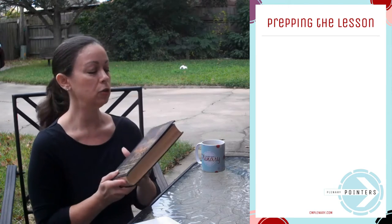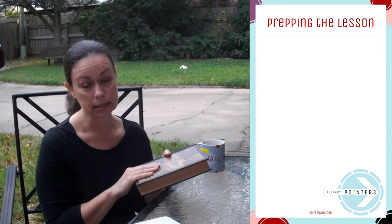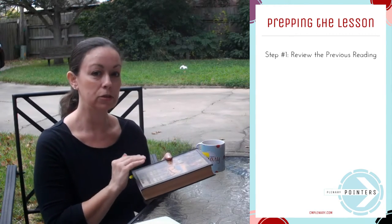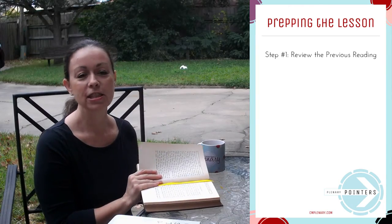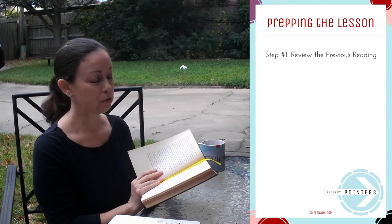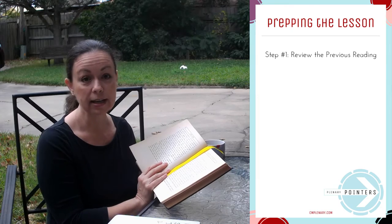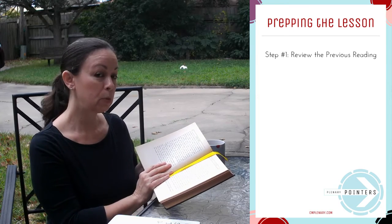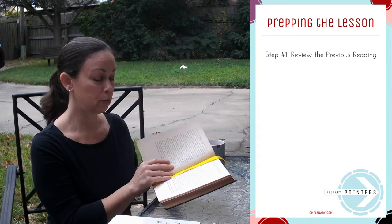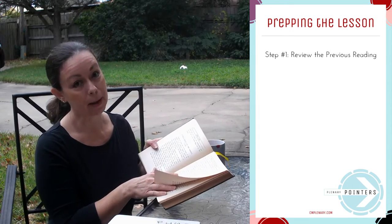The first thing you want to do when you go to prep a lesson is to review the previous reading. Today we're going to use the example of chapter 34, Paul Revere's Ride, as our reading. But remember we want to review the previous chapter, and in this case it's all about Patrick Henry.